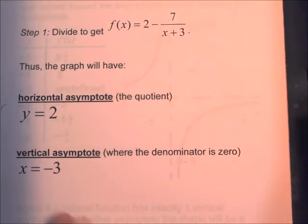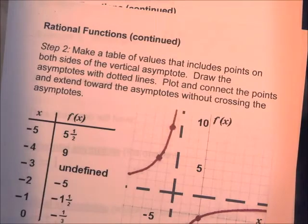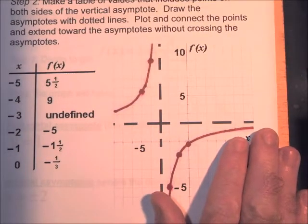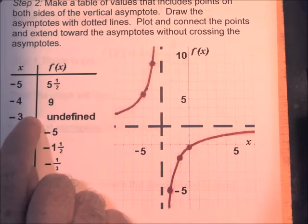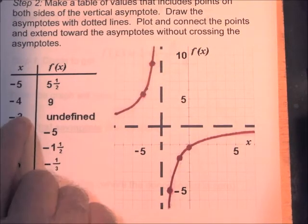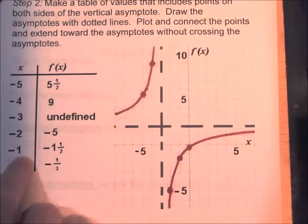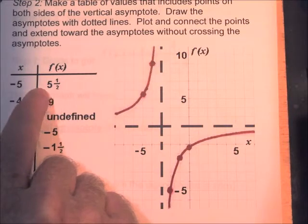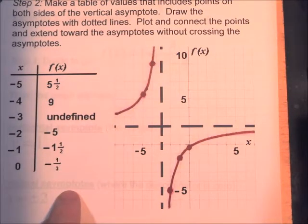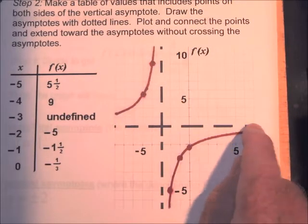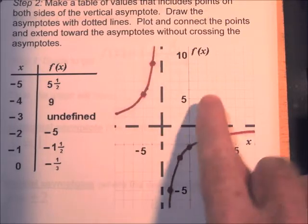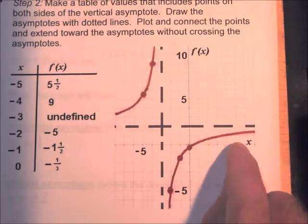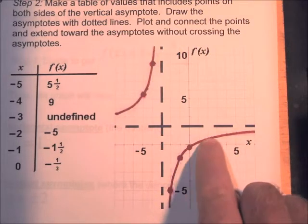The vertical asymptote is x equal to negative 3. It's going to be a hyperbola again since we have one vertical and one non-vertical asymptote. We pick points on either side: negative 5 and negative 4 less than negative 3, and negative 2, negative 1, and 0 greater than negative 3. We plug these into the function, plot the points, draw dotted lines for y equals 2 and x equals negative 3, then connect the points and extend the graph toward the asymptotes.